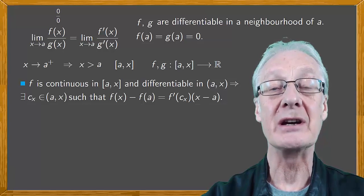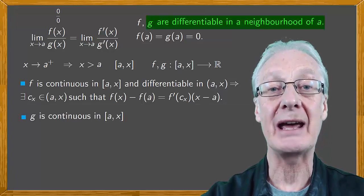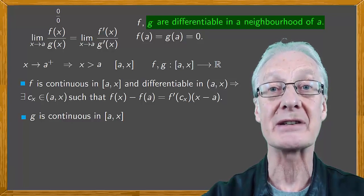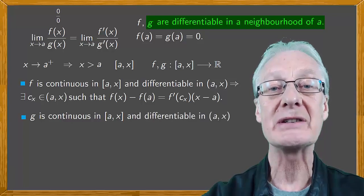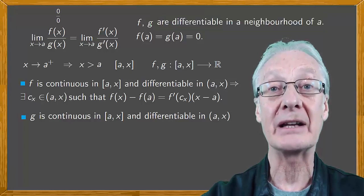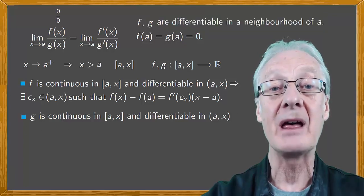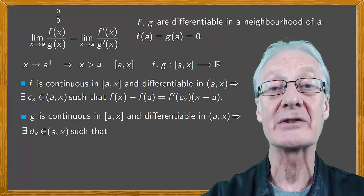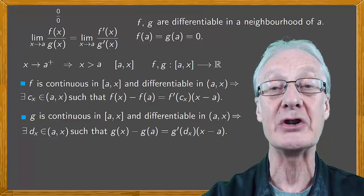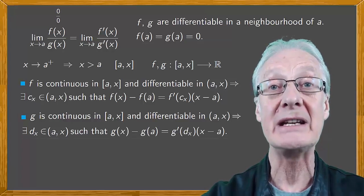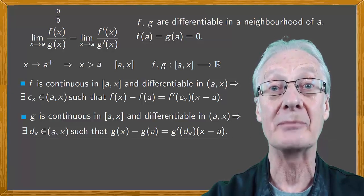In the same way for g, g is continuous in [a,x] being differentiable throughout the neighborhood that contains this interval. g is differentiable in the open interval (a,x) and again by the mean value theorem there'll be a value d_x on the open interval (a,x) such that g(x) minus g(a) equals g'(d_x) times (x minus a).